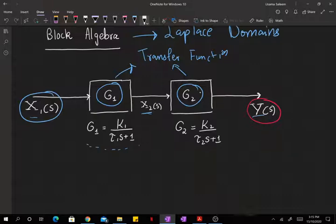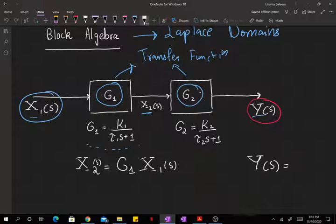Now, since we know x1 is mapped to x2 by the transfer function g1, we can write x2 equals g1 times x1. And they're both in the frequency domain, the Laplace domain. And y is mapped by transfer function g2, operated on x2.